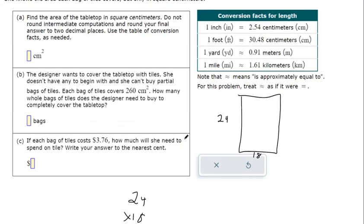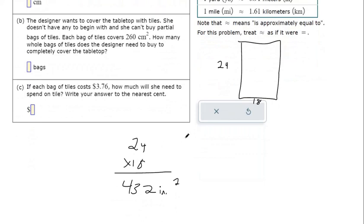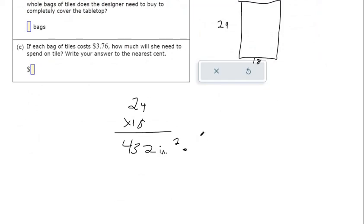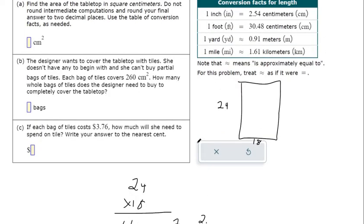But we want to convert this to square centimeters. So we want to multiply by a conversion factor. We have that one linear inch is 2.54 linear centimeters. I want to put the centimeters up top so the inches can go on bottom and cross cancel.